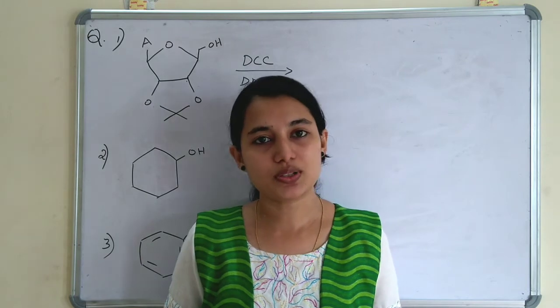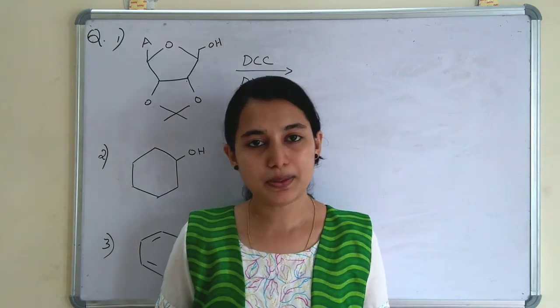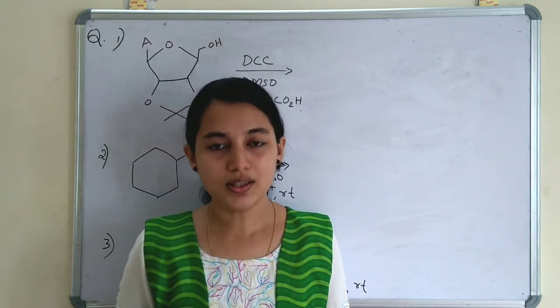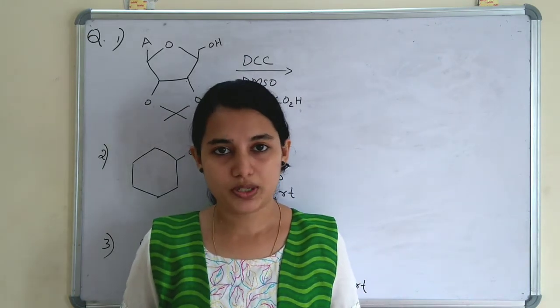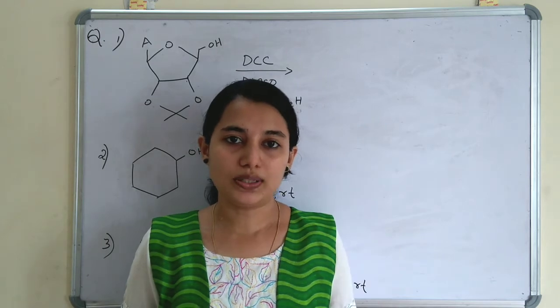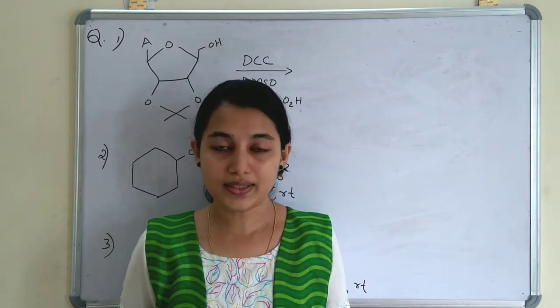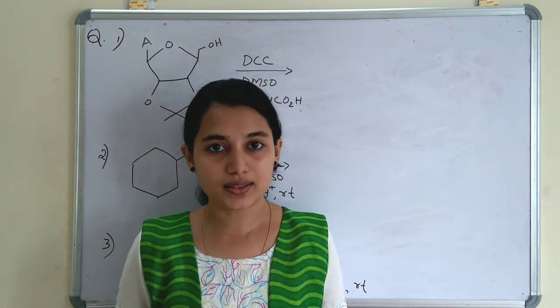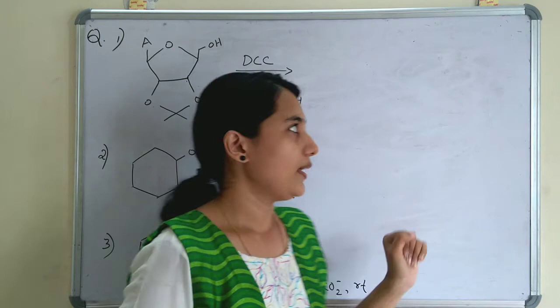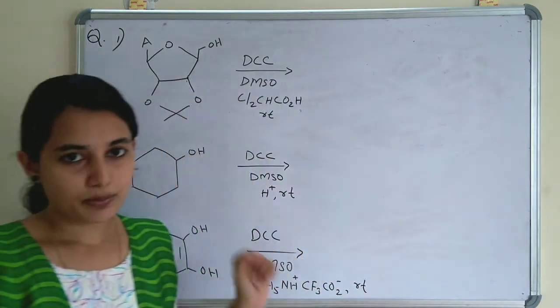The reagents of Moffat Oxidation are DMSO, DCC, and an acid, carried out at room temperature. Primary alcohol gives aldehyde and secondary alcohol gives ketone. Now we can solve some problems.